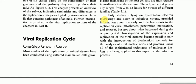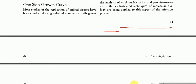Early studies relying on quantitative electron microscopy and assay of infectious virions provided information about early and late events in the replication cycle — attachment, penetration, maturation, and release — but not about what happened during the eclipse period. Investigations of expression and replication of viral genomes became possible only with the introduction of biochemical methods for the analysis of viral nucleic acids and proteins. Now all of the sophisticated techniques of molecular biology are being applied to this aspect of the infection process.